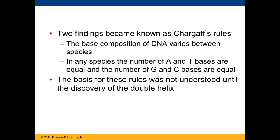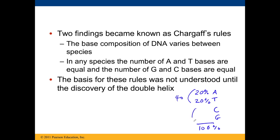The other thing Chargaff's rule tells us is if we're told a percentage of one of the bases — let's say 20% of the bases in some organism is the base A — you can tell the percentage of the other bases. If 20% is A, then 20% has to be T. This has to add up to 100%, so if A and T together are 40%, that leaves 60% for C and G. Since C and G must be equal, that means 30% C and 30% G. You can calculate the percentage of any base if you're given one.